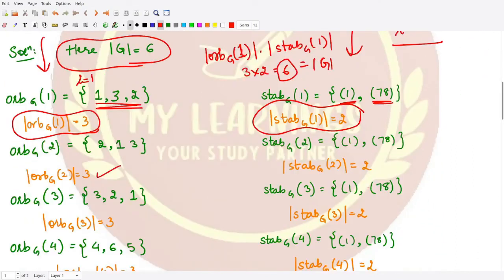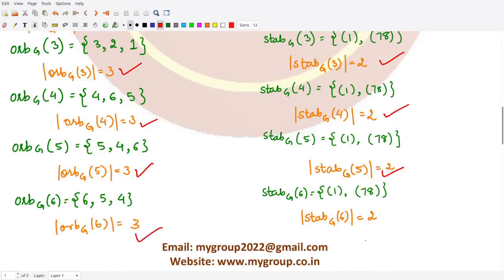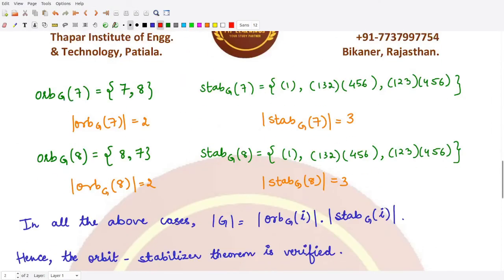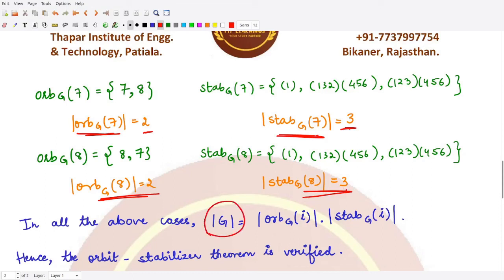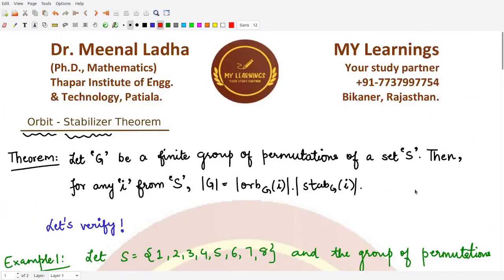In all the other cases, we see the same pattern: multiplying the order of the orbit with the order of the stabilizer gives six, which is the order of our group. For elements seven and eight, the order of the orbit is two and the order of the stabilizer is three, so two times three is again six. In all cases, the order of G equals the order of the orbit multiplied by the order of the stabilizer. Hence the Orbit-Stabilizer Theorem has been verified. In the next video we shall look at the proof of this theorem.